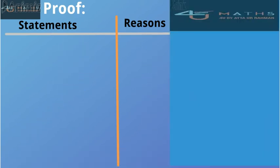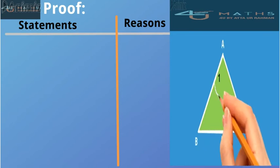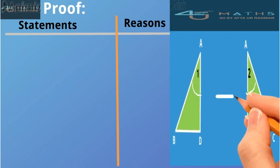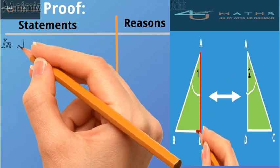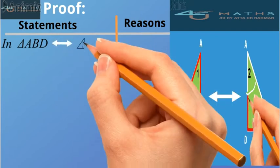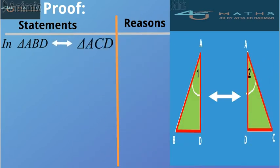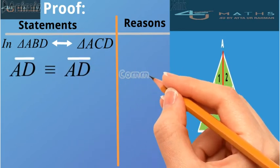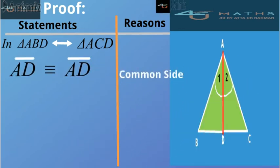We compare two triangles, triangle ABD and triangle ACD. In the correspondence of these two triangles, we have that AD is congruent to AD. This is the common side to both triangles.